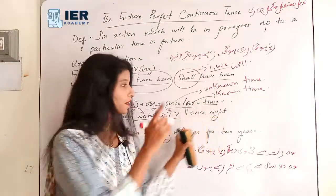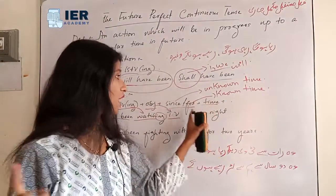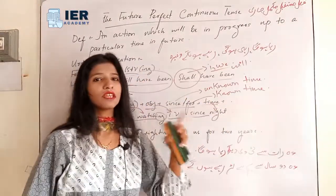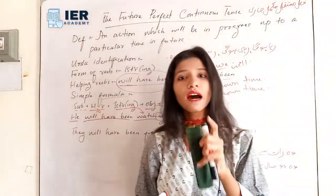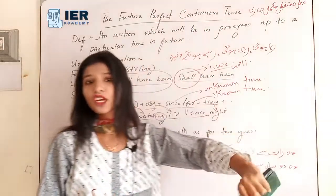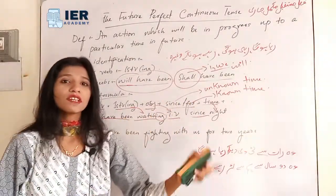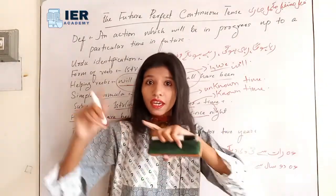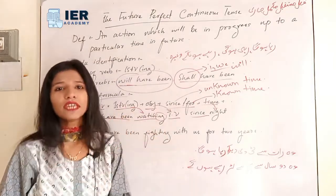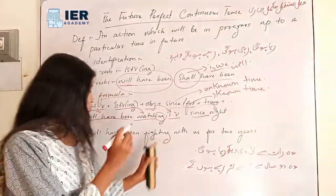So after object, we bring since/for + time + full stop. The sentence: 'He will have been watching TV since night' — وہ رات سے ٹی وی دیکھ رہا ہوگا. This matches our definition: an action which will be in progress up to a particular time in future. We are talking about the future — what he will be doing.